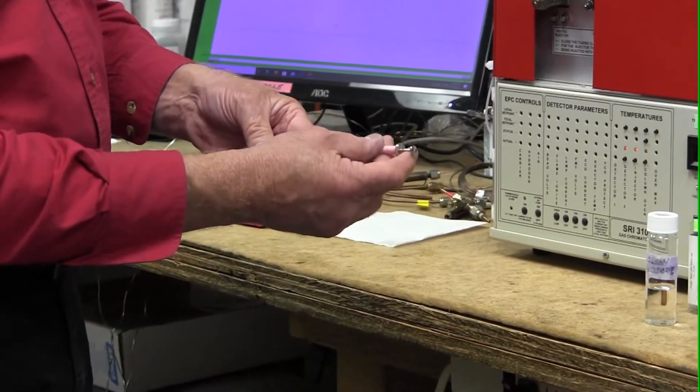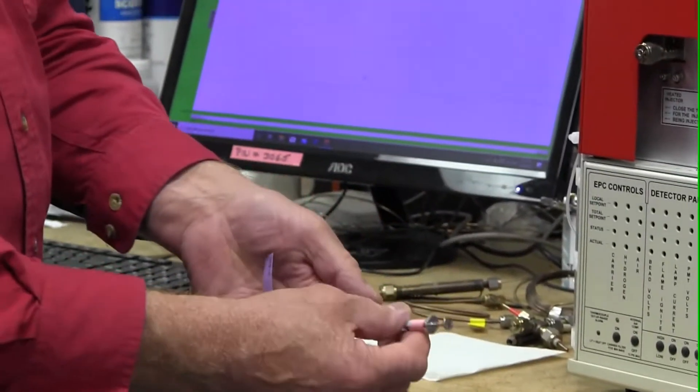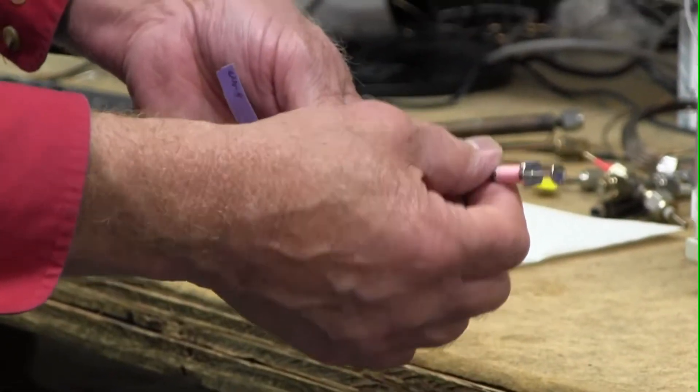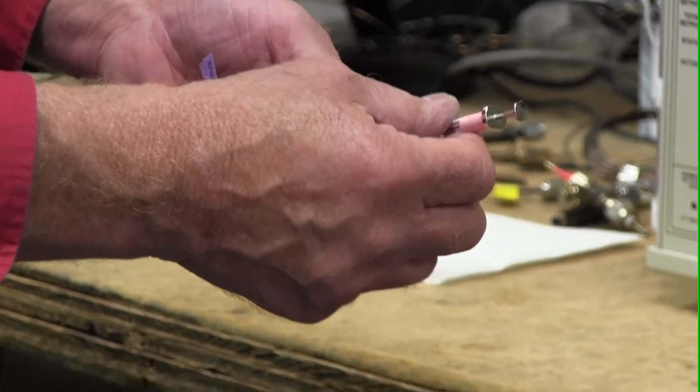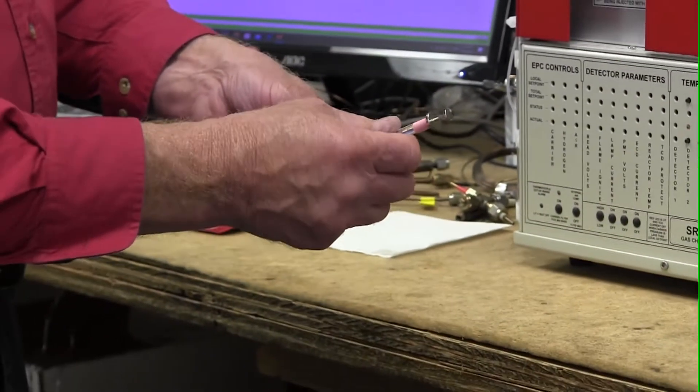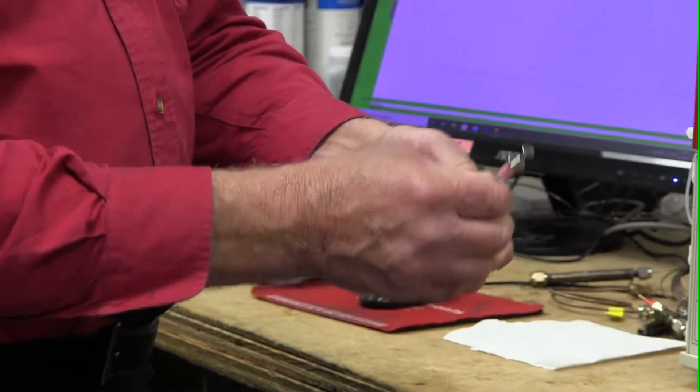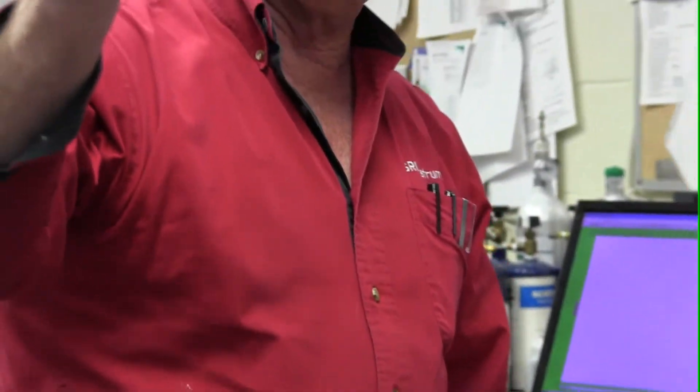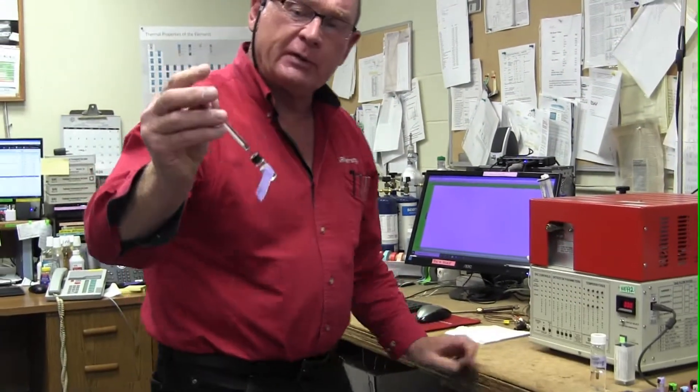The first time you puncture the septum, you need to support the syringe needle with your thumb and forefinger so you don't bend the needle as you're forcing it through the septum for the first time. You hold on like this and then you poke straight down, and then you're in the calibration standard and you can pump the syringe.